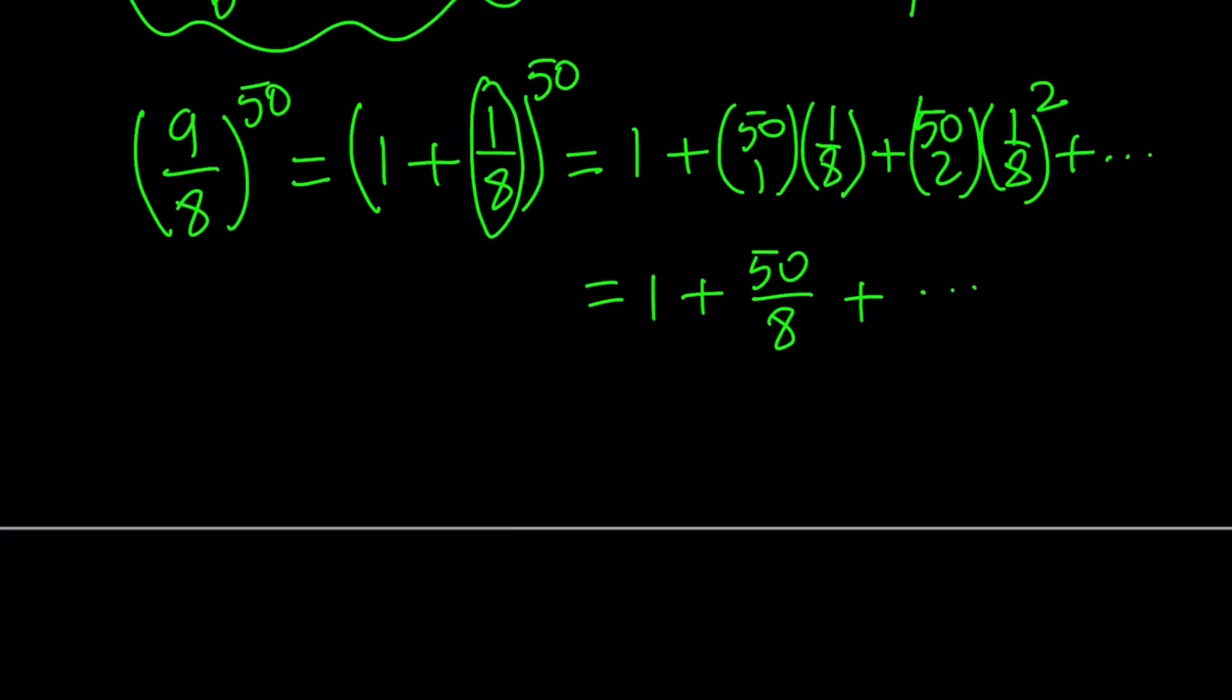So what is this? 50 choose 1 is 50, because n choose 1 is always n, multiply by 1 eighth, this is going to be 50 over 8, which you can write as 25 over 4, which is about 6.25, I think, right? Or exactly 6.25. And then dot dot dot. I don't really need those. Now why did I do this? So here's my goal. I want to prove that this fraction here, 9 over 8 to the 50, and think about Euler's number, the answer is going to be greater than 2. That's my claim.